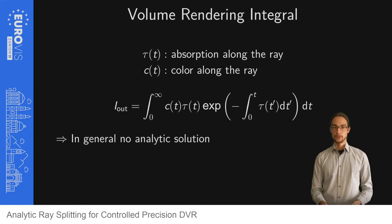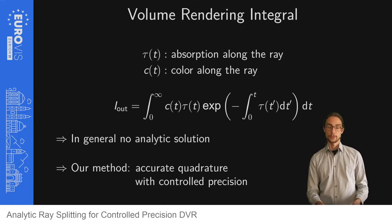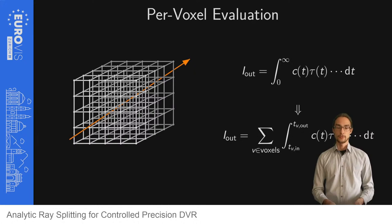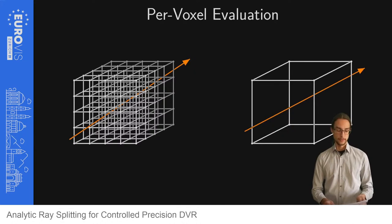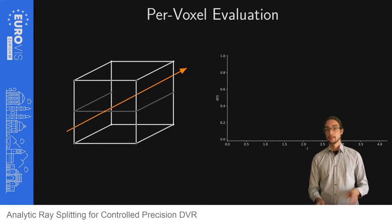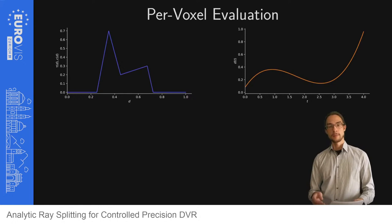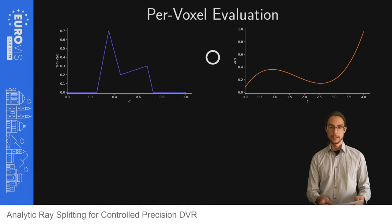Let tau be the absorption along the ray and let C be the color along the ray. The output color is then given by this nested integral. In the general case it has no analytical solution. Our method allows for an efficient and accurate evaluation with controlled precision. We assume the data to be given on a hexahedral grid. We can split the integral at the boundaries of the voxel, allowing us to process each voxel independently. Within the voxel trilinear interpolation is used, giving rise to a cubic polynomial of the density along the ray. The transfer function is then given as a piecewise linear function, and applying it on the density along the ray gives rise to a piecewise cubic function.